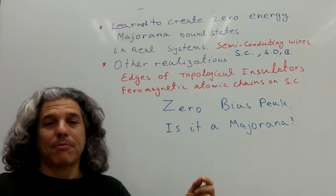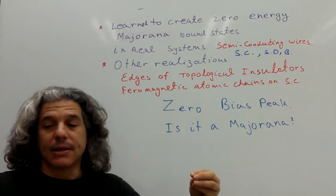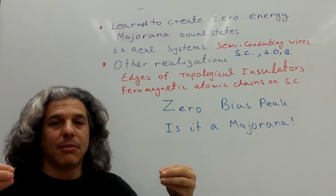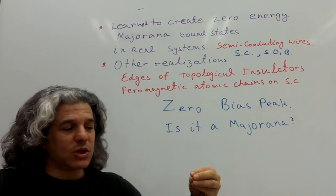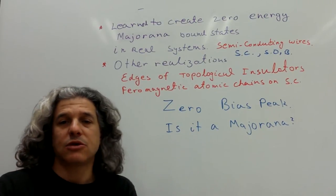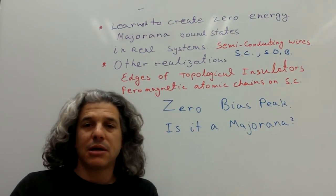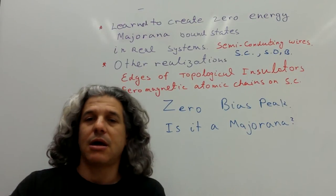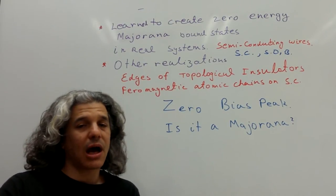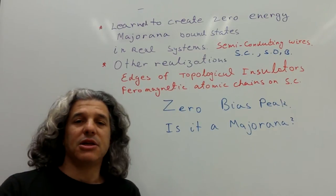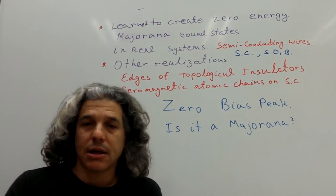The model also predicts that the Majorana peak will split into two when we change the distance between the Majoranas — namely, when we change the length of the wires. Some of these features have already been seen experimentally, and some are waiting for experimental verification. There are other predictions that this simple model makes as well.